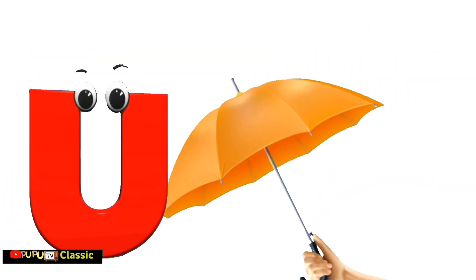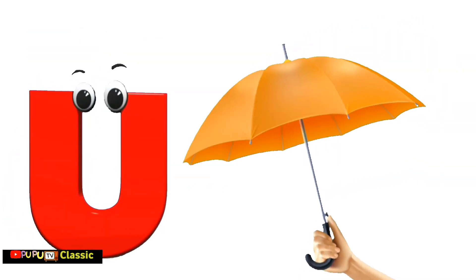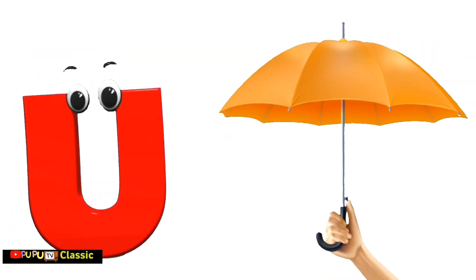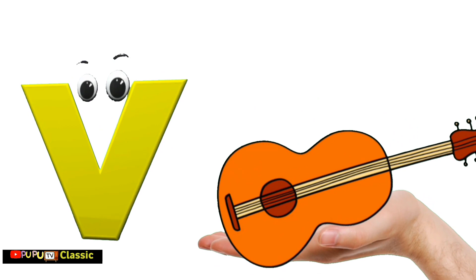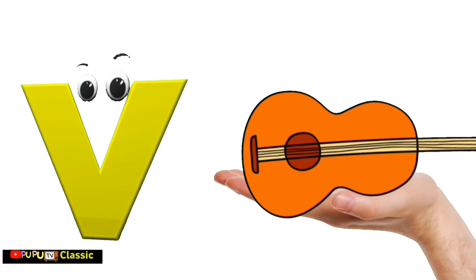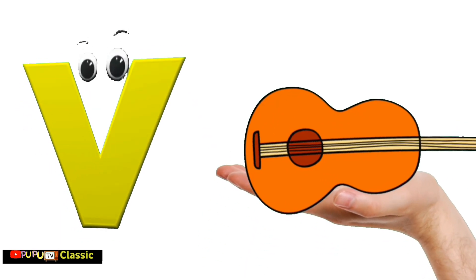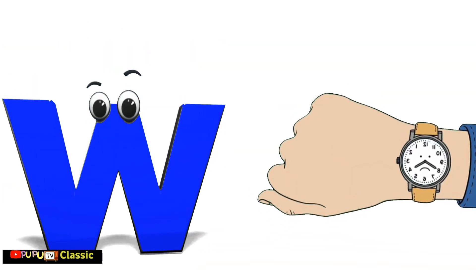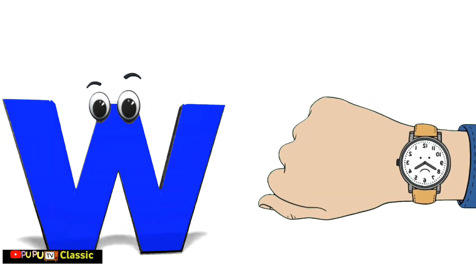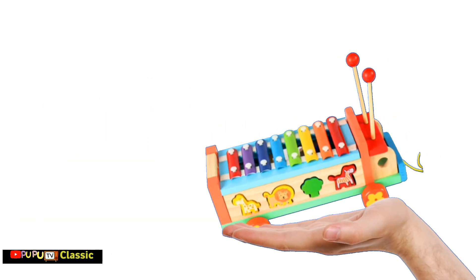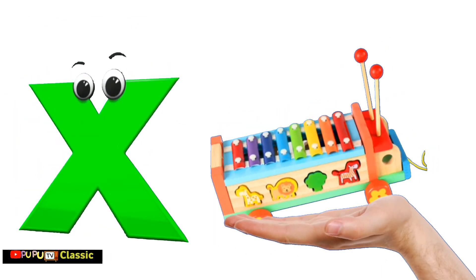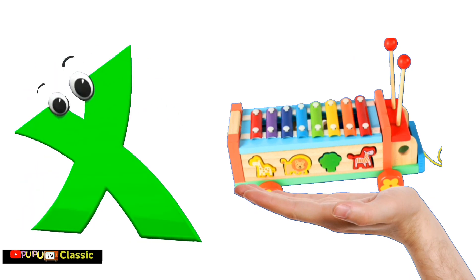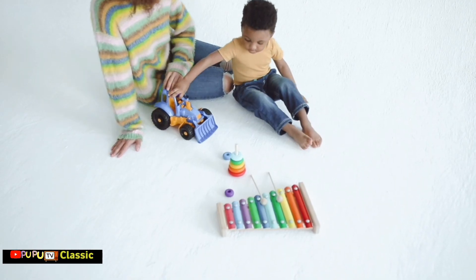U is for Umbrella, U-U-Umbrella. V is for Violin, V-V-Violin. W is for Watch, W-W-Watch. X is for Xylophone, X-X-Xylophone.